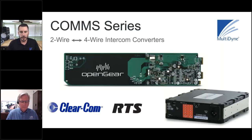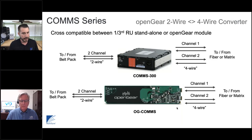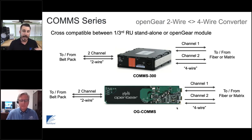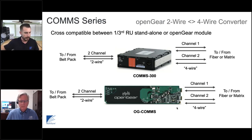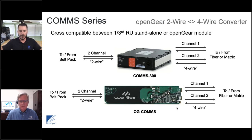On the intercom front, we convert party line two-wire RTS or Clearcom to four-wire for use in matrices or optical extension. A party line is usually wet — it has power on it to power belt packs — so we remove the power, convert to four-wire, do the transport, and take it back to party line with power. We can power up to six belt packs in some cases, allowing you to daisy chain belt packs for production over the single-fiber transport layer.